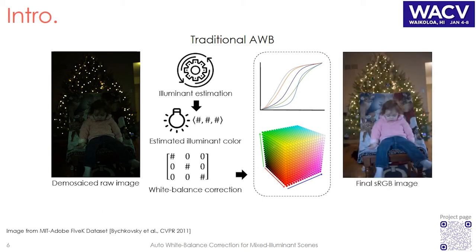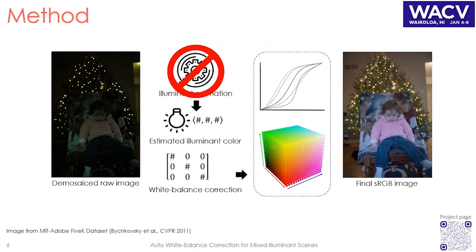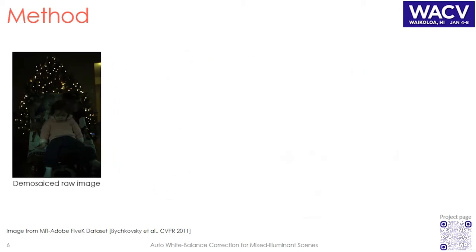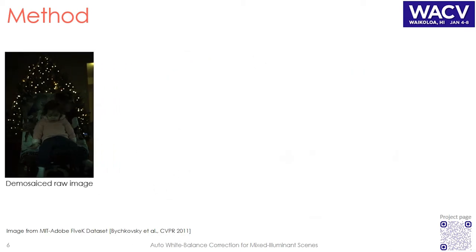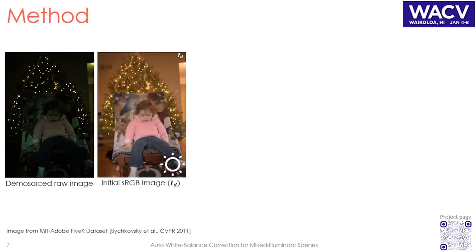In a departure from conventional auto white balance, our method does not require illuminant estimation. Instead, our method proposes to render the captured scene with a fixed white balance setting, for example daylight. We then downsample this initial sRGB image to speed up processing.